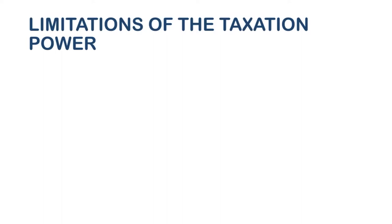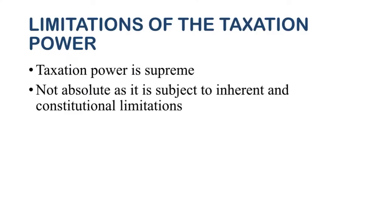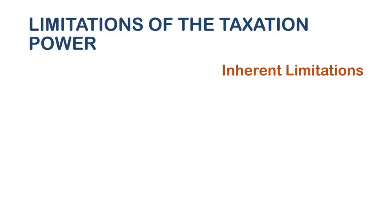Taxation power is supreme — it can tax any person or object within the jurisdiction of the government. However, it is not absolute because it is subject to inherent and constitutional limitations. There are five inherent limitations. These are called inherent limitations because even without a law or constitution exempting or limiting taxation power, these limitations must still be observed.